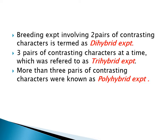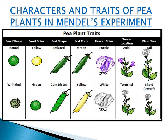A breeding experiment involving two pairs of contrasting characters is termed as dihybrid. If three or more pairs of contrasting characters are considered, it is called a polyhybrid experiment. The characters of the pea plants studied in Mendel's experiment are: seed shape, seed color, pod shape, pod color, flower color, flower location, and plant size.